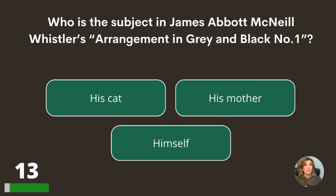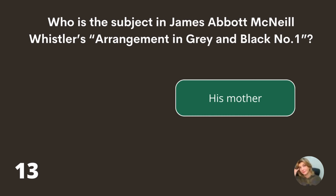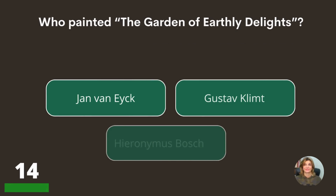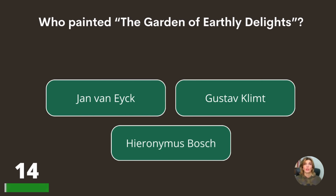Who is the subject in James Abbott McNeill Whistler's Arrangement in Gray and Black, Number One — his cat, his mother, or himself? His mother. Who painted The Garden of Earthly Delights — Jan van Eyck, Gustav Klimt, or Hieronymus Bosch?